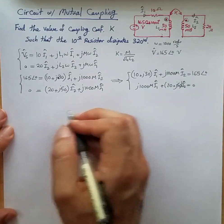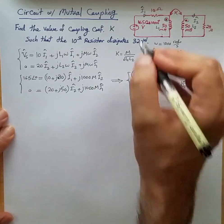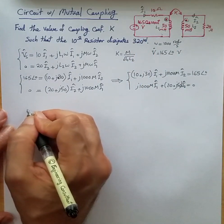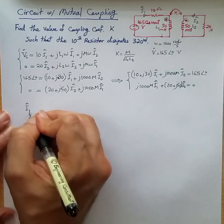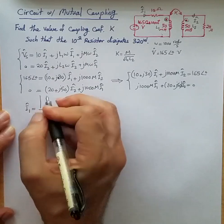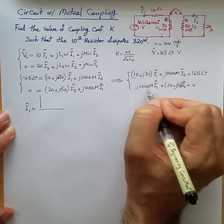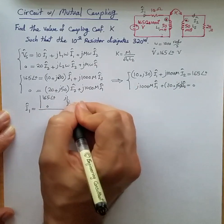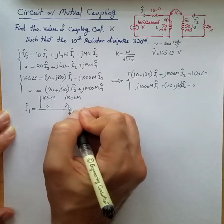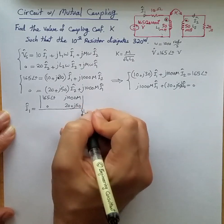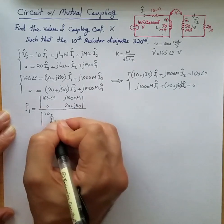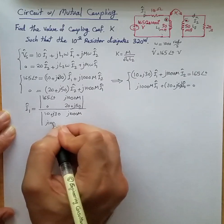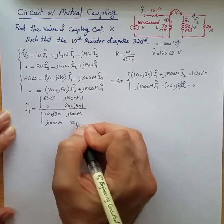We can use Cramer's rule to figure out the value for I1 that we need in order to find the dissipated power in 10 ohms. I1 phasor equals the determinant of replacing the I1 coefficients with 165 phase 0 and 0, and j1000M, and 20 + j50 in the numerator. In the denominator we have 10 + j30, j1000M, j1000M, and 20 + j50.